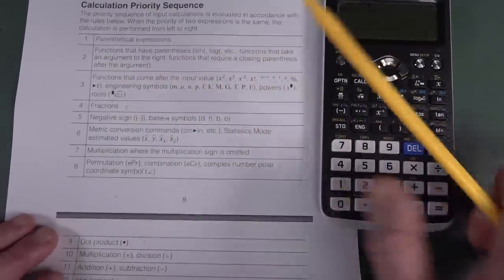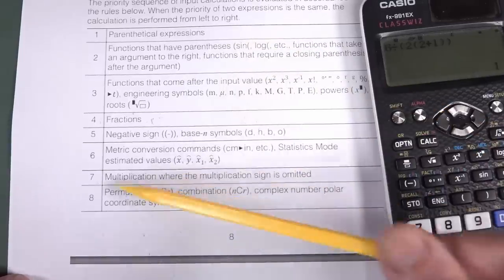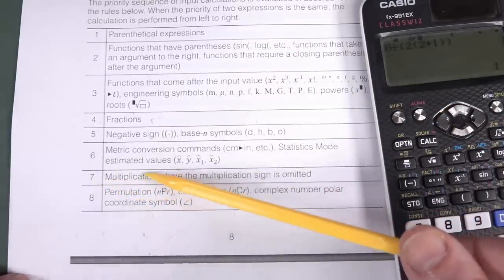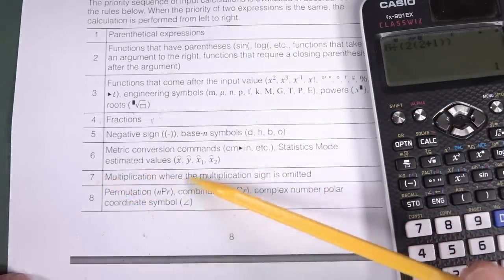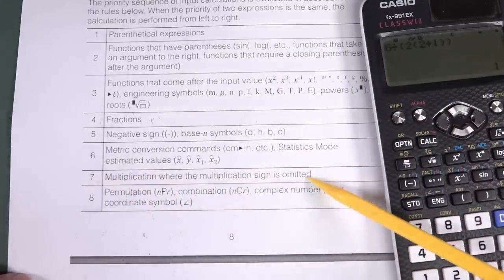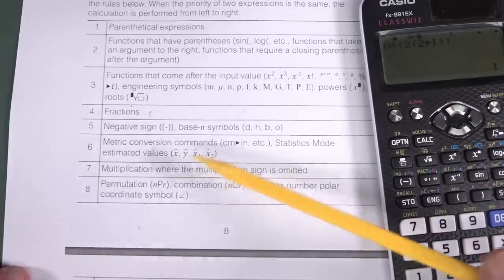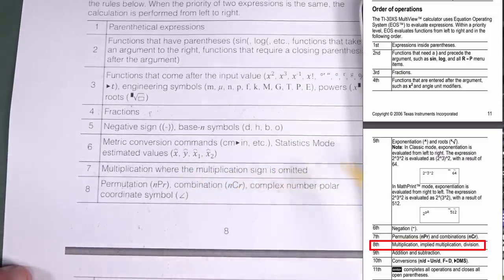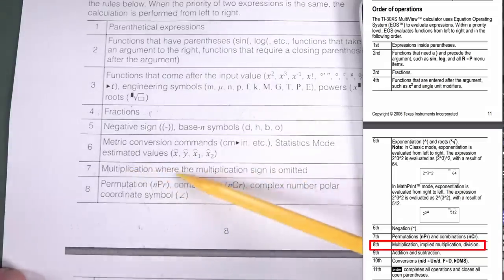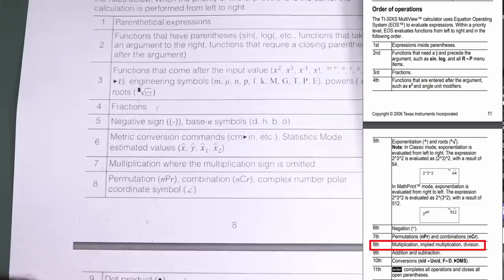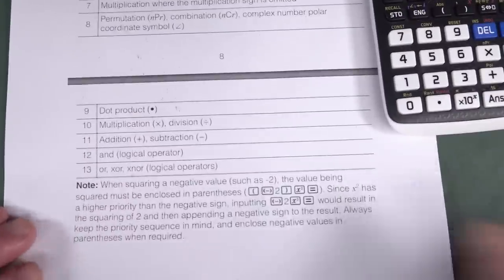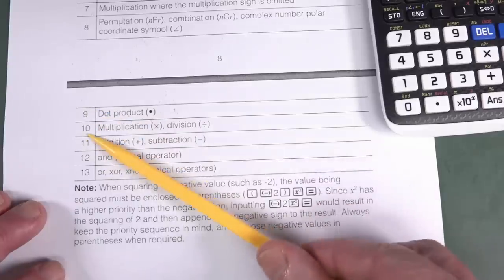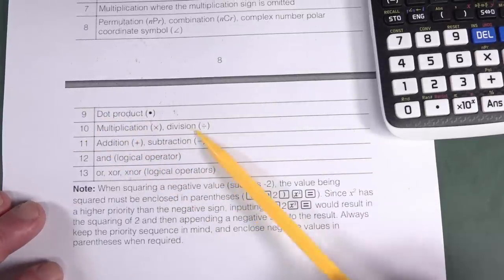Look at this. Number one is, as I said, parenthetical expressions. Basically anything in the parentheses. So two plus one will get evaluated first. And then functions that have parentheses. So function sine, cos, tan and all that. So you have to get all the way down to priority number seven here until you find multiplication where the multiplication sign is admitted. So they're saying that means implied multiplication or juxtaposition.